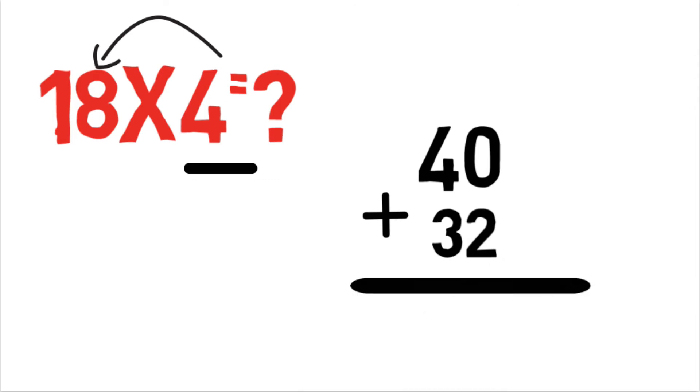Now if I add 40 and 32, so answer is 72. So 18×4 is 72 in very simple way.